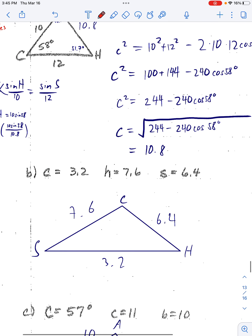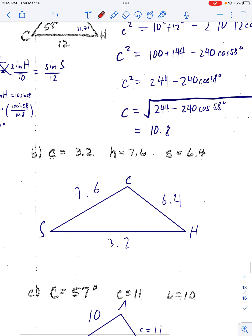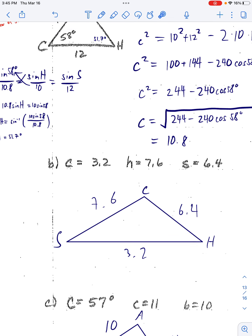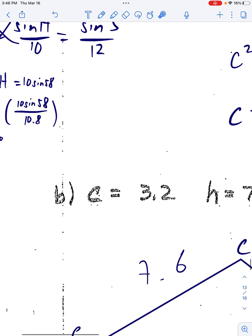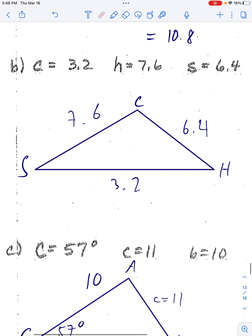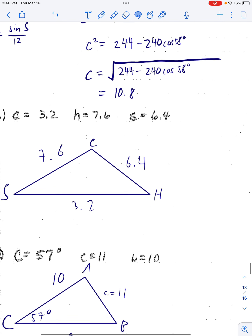Coming down here to triangle B — they gave us SSS, all three sides. That's a case where we want to use the law of cosines. If you tried to use the law of sines, you'd have all the lengths on the bottom but nothing to plug into the top — two variables in each equation you can't solve. So when they give you side, side, side, use the law of cosines.